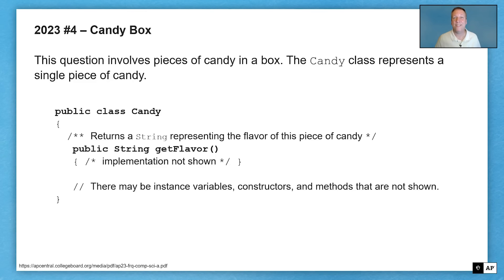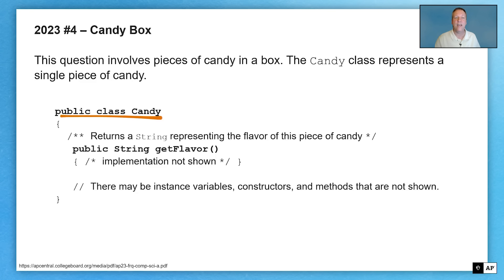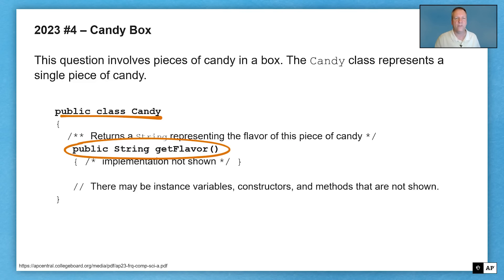Here we go. This question is about 2D arrays. This is the 2023 number four question. And as we know, question number four on the AP exam is always about 2D arrays, and this one's no different. So it says that this question involves pieces of candy in a box, and the Candy class represents a single piece of candy. We have this public class Candy, and there's only one method we're concerned with: public String getFlavor. There may be other instance variables, constructors, and methods not shown, but we don't care.